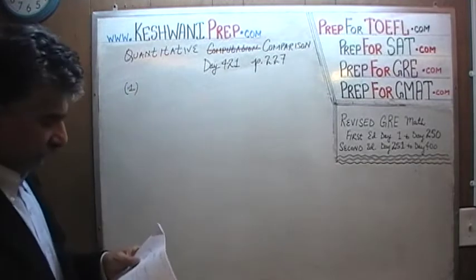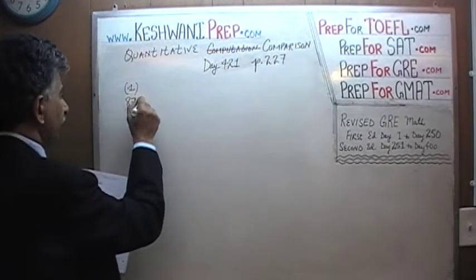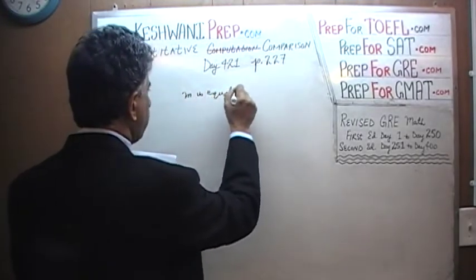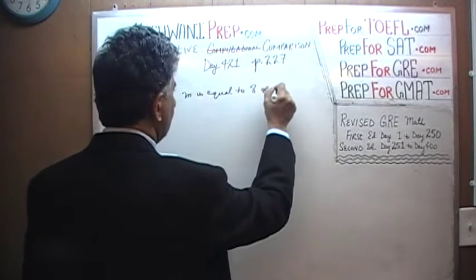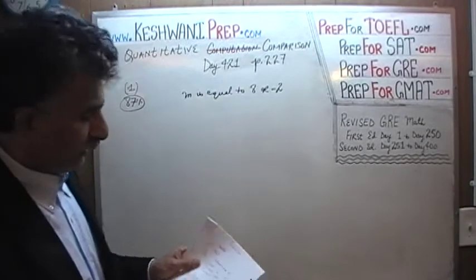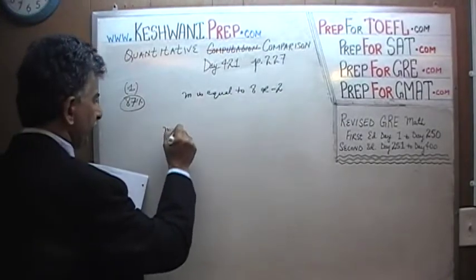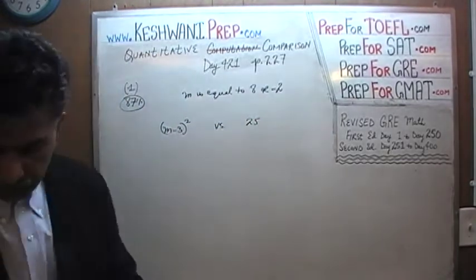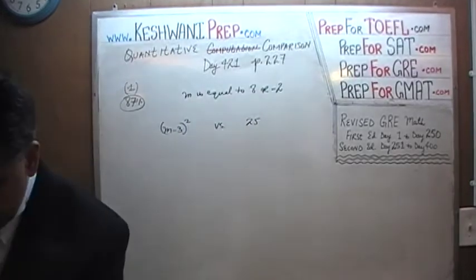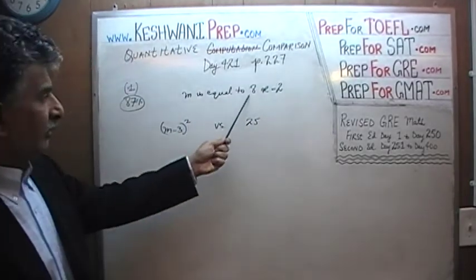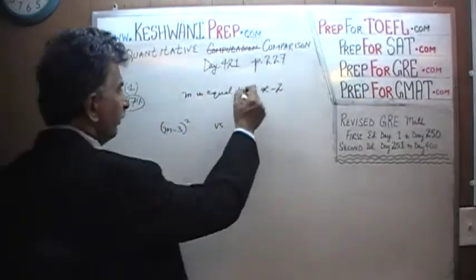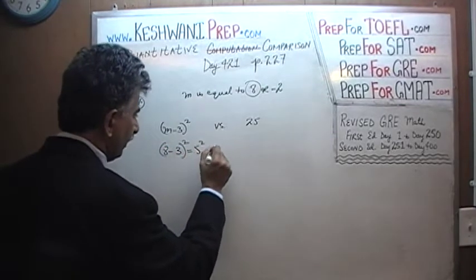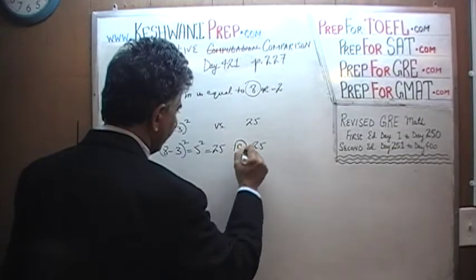Problem number 1 — when it was given in the real exam, 87% of people got it right. We are told that m is equal to 8 or negative 2. What we are being asked to compare is (m minus 3) squared versus 25. All we have to do is plug in the values. Let's first plug in 8: (8 minus 3) squared is 5 squared, which equals 25.